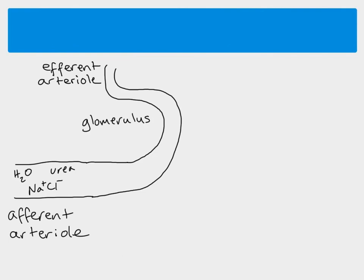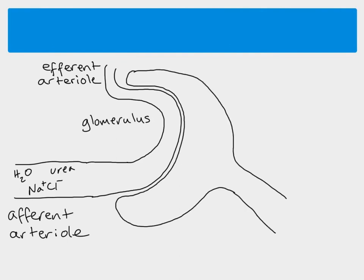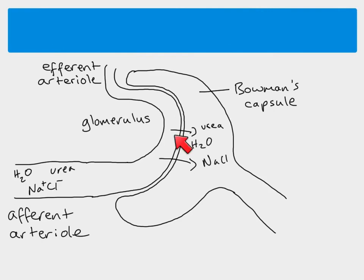This glomerulus, this network of capillaries, is nestled inside the Bowman's capsule. The Bowman's capsule is where substances such as urea, water, and salt move across from the capillary and into the Bowman's capsule. Once the substances are in here, this fluid is known as filtrate. That filtrate will then continue down through the rest of the nephron. So ultrafiltration is this process of moving substances from the blood into the Bowman's capsule.